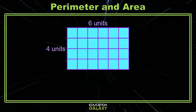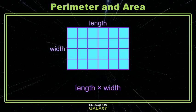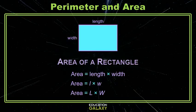You might remember when we worked with rectangular arrays that we could find the total number of square units by multiplying the number of rows by the number of columns. For the area of rectangles, we're going to use the same method: multiply length times width. Sometimes you'll see that written as a formula with just L times W.